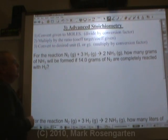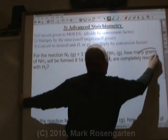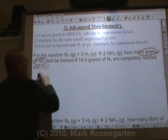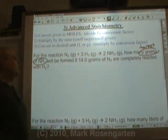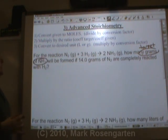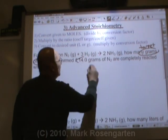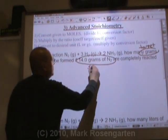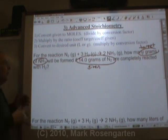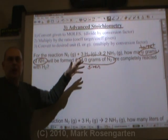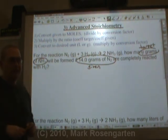For the reaction N2 + 3H2 → 2NH3: how many grams of NH3 will be formed if 14 grams of N2 are completely reacted with H2? Grams of NH3 is our target, and 14 grams of N2 is what's given. The problem states we have enough H2 to do the job, so we don't need to worry about how much H2 there is.